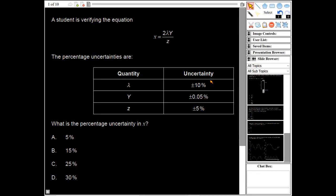Whenever you have multiplication or division, what you need to do is add the percentage uncertainties in each quantity. So percentage uncertainty in 2 would be nothing, in lambda it's 10%, then in y it's 0.05%, and then in z it's 5%. So essentially we're doing a division here of y and z, so we would add the percentage uncertainties of 10 and 5.